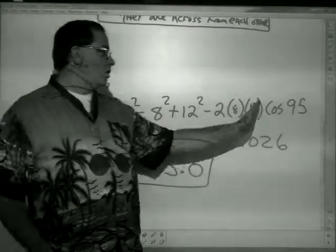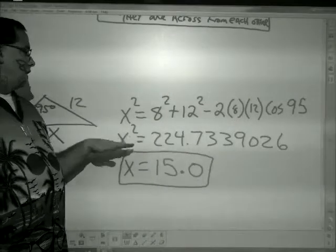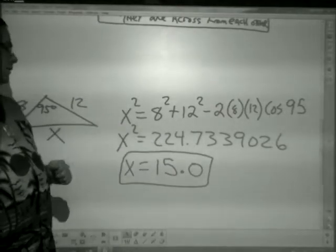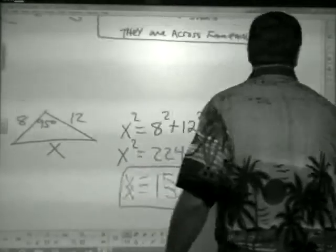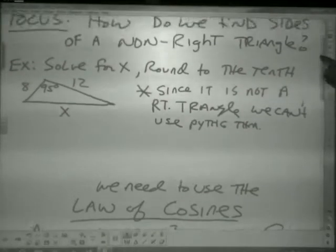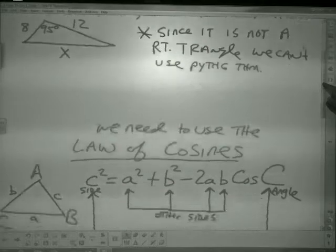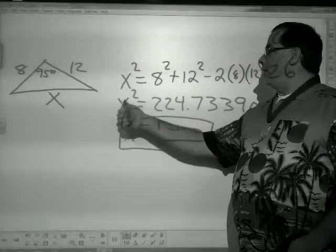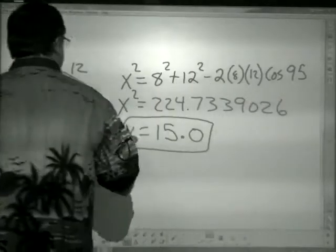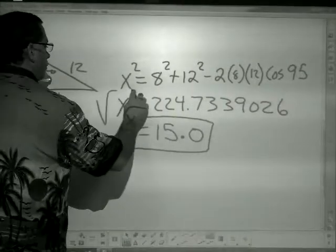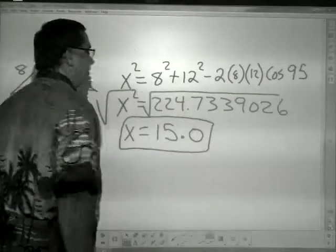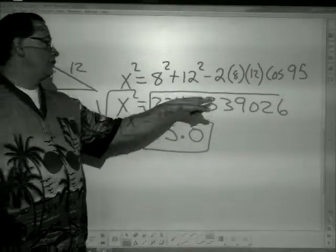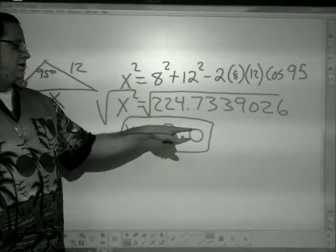You'll enter it all in and you'll have x squared equals some large number — don't round yet. The rounding directions say to the nearest tenth, but you don't round until the very end. To undo the square, you square root both sides. When you take the square root of x squared you get x, and the square root of that number rounds to 15.0.